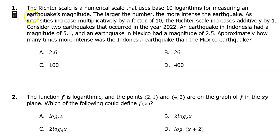Number 1 is Calculator Active. The Richter scale is a numerical scale that uses base 10 logarithms for measuring an earthquake's magnitude. The larger the number, the more intense the earthquake. As intensities increase multiplicatively by a factor of 10, the Richter scale increases additively by 1.